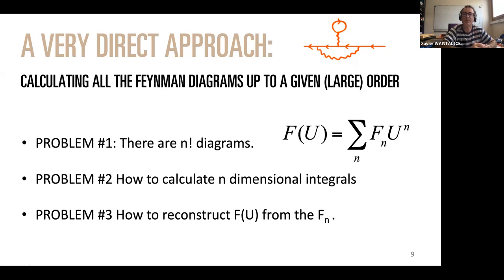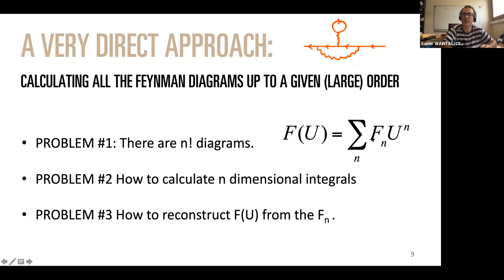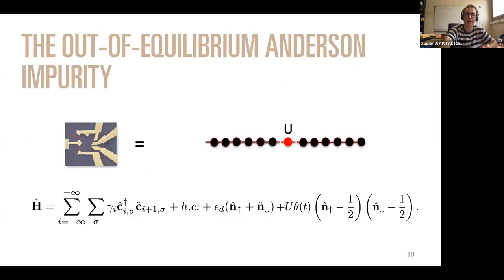Essentially what we calculate are the coefficients f_n — for any observable like charge, current, or a Green's function, we calculate them order by order. Then the last problem is recovering f itself from these coefficients. When U is small enough, the series converges with a finite radius of convergence, so you can compute by taking a finite polynomial. But when U is larger than the convergence radius you must do something else, and I'll tell you how we construct f(U) from these coefficients and how we can go beyond the convergence radius.